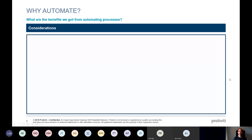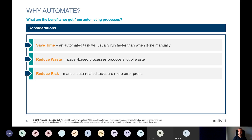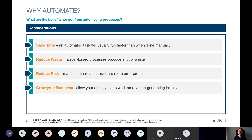We talk a lot about automation, but why do we even need to automate things? First, it saves you time — if there's any task you do manually, the computer can do it faster. Second, reducing waste: if your processes require printing paper or getting sign-offs, automation eliminates that. Third, reducing risk: humans make mistakes, but computers are binary — they do something consistently with no interpretation unless you ask.